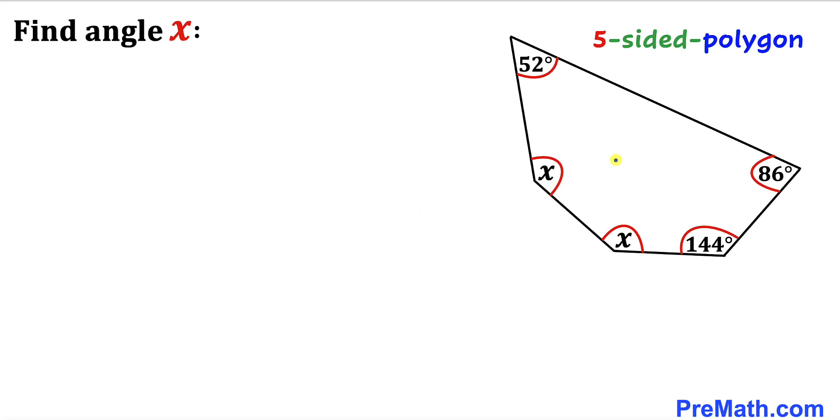Welcome to PreMath. In this video we have a five-sided irregular polygon. We have been given three angles: 52 degrees, 86 degrees, and 144 degrees, and now we are going to calculate angle x.